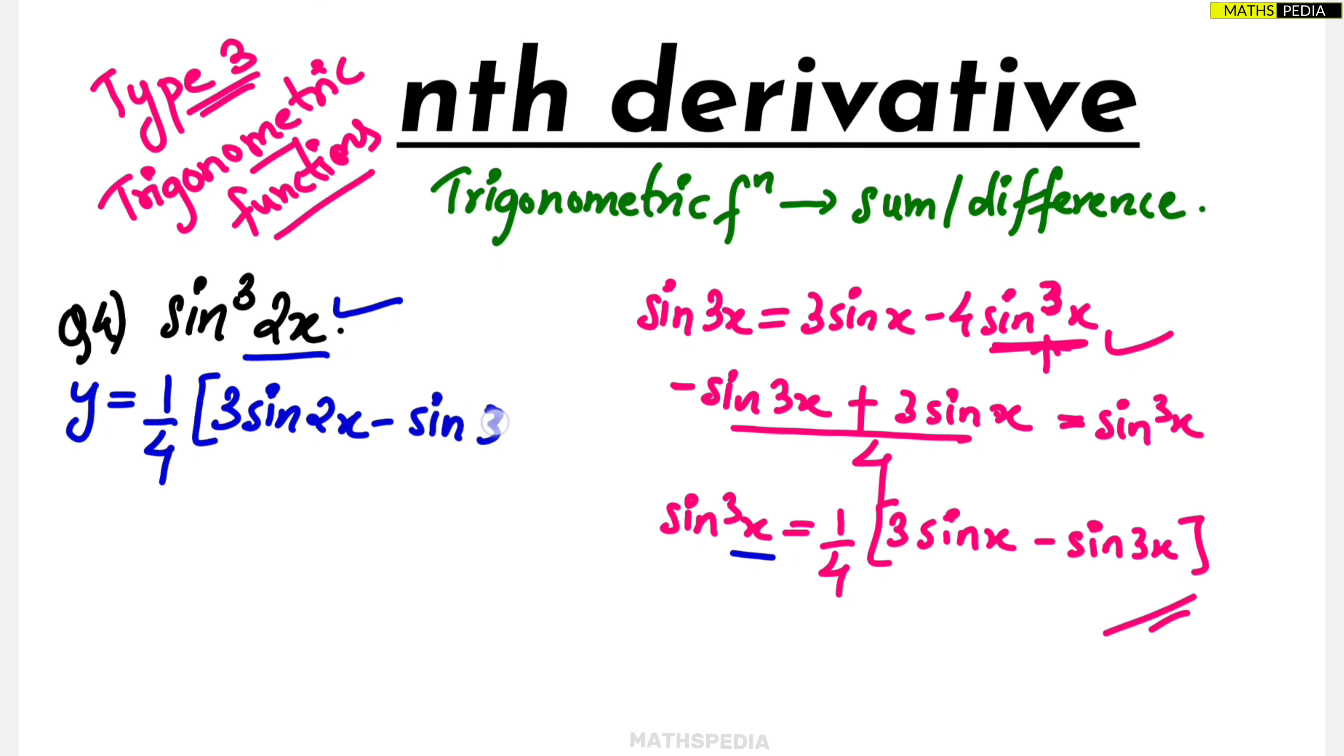3x is there, in place of that 2x. So be very careful while putting. Here x is there, but here 3x is there, so 3 into 2x. This 2x is nothing but x value. Now it will become 1 by 4, 3 sine 2x minus this will be multiplied sine 6x.